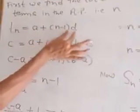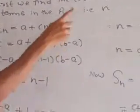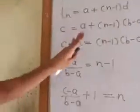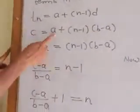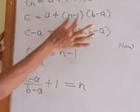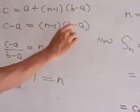Use the formula TN equals A plus N minus 1 into D. TN is given as C, so C equals A plus N minus 1 into D, where D is B minus A. Transferring A to the other side: C minus A equals N minus 1 into B minus A.